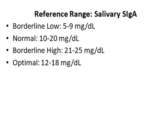Now let's take a look at the reference range of secretory IGA in the saliva. These values are used by a company called Diagnostex, which is what I use for adrenal saliva testing in my practice. A borderline low reading is between 5 and 9 mg per deciliter. Normal is between 10 and 20. Borderline high is between 21 and 25, and elevated is greater than 25. Optimal would be between 12 and 18 mg per deciliter.